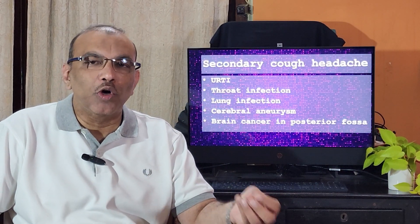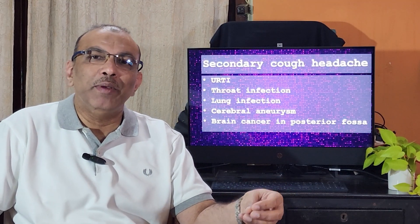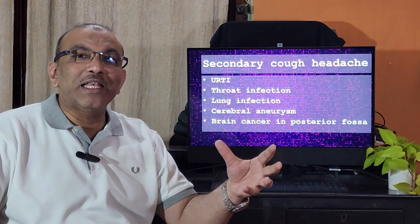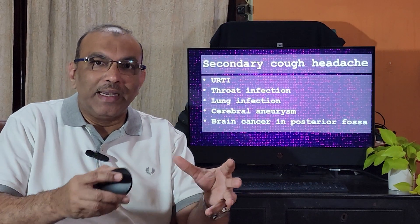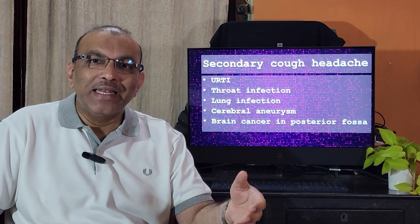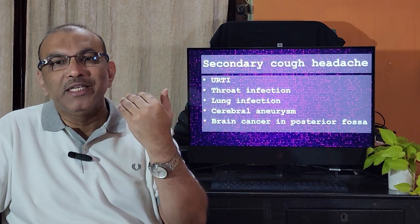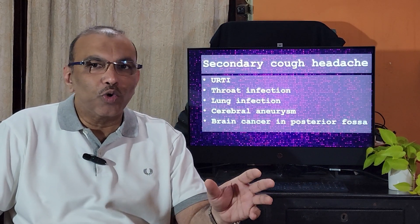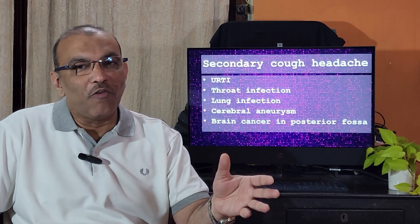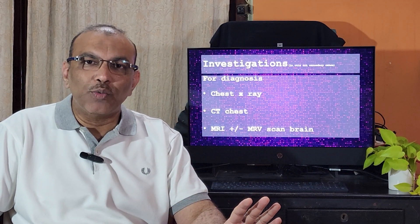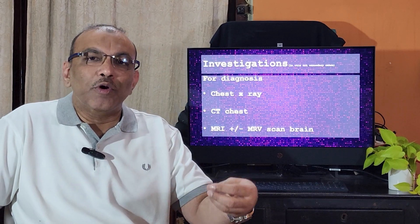One cause could be an aneurysm - there are many blood vessels in the brain and one of them can start dilating in one particular direction, which is called an aneurysm. Another cause is malignancy or cancer, particularly in the posterior part of the brain - the posterior fossa. These are one or two common causes of secondary cough headache which cannot be neglected. Common infections in the upper or lower respiratory tract can be easily dealt with and may not need investigation unless prolonged.